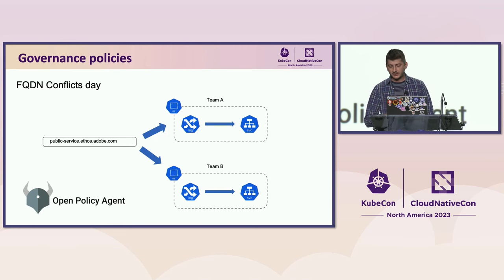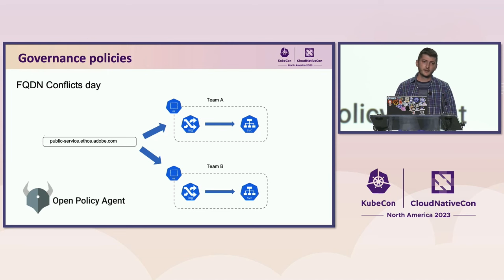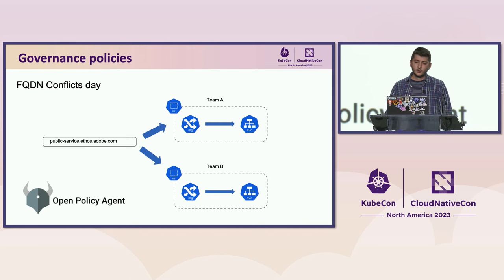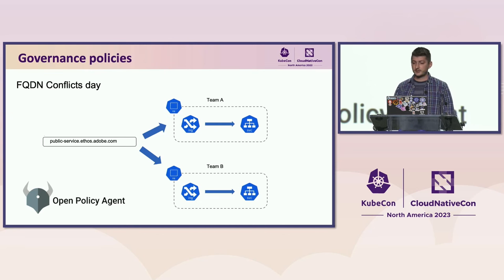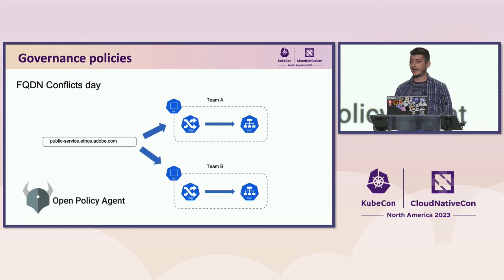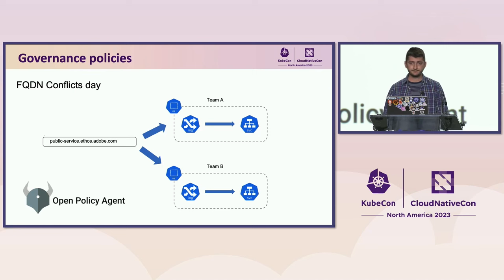OPA-Gatekeeper is an extensible admission controller already configured with all the necessary Kubernetes API plumbing. Cluster operators can change the business logic of Gatekeeper by simply writing policies — regular queries as short as a few lines. After that outage, we created the validating Ingress policy, which denies the creation or update of Ingress objects that attempt to use an FQDN already in use by any other existing Ingress objects.